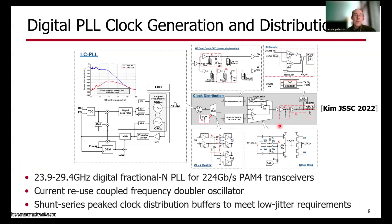High-frequency, low-jitter clock generation and distribution is also very important. Shown here is an example of a digital fractional-N PLL-based clock generation that nominally generates a 28 gigahertz quarter-rate clock for a 224 gigabit per second PAM4 transceiver. Key design techniques include a current-reuse coupled frequency-doubled oscillator, and in the clock distribution, shunt-series clock distribution buffers are used to meet very low jitter requirements.